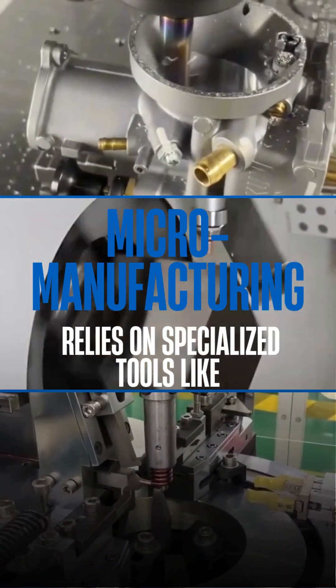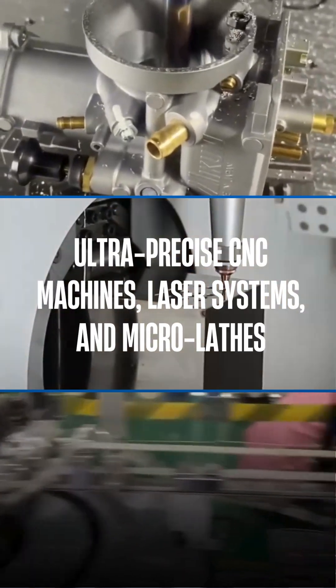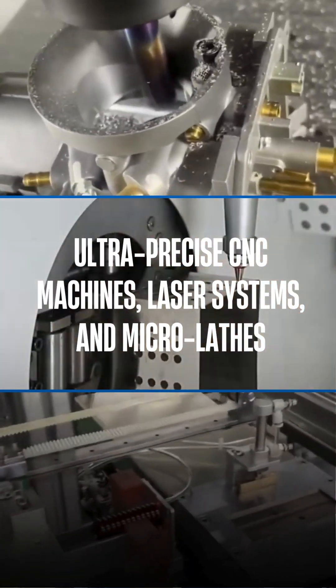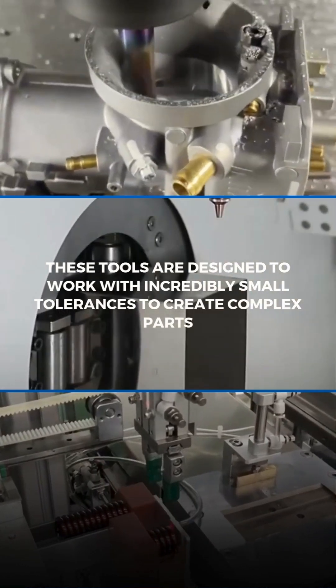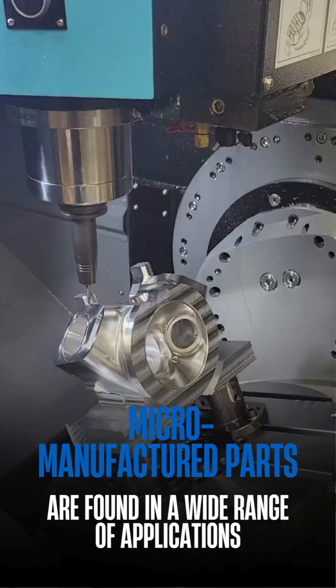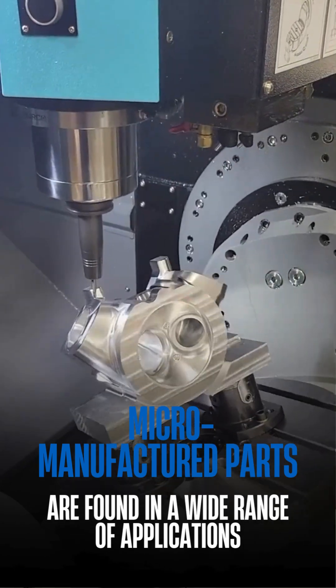Micro-manufacturing relies on specialized tools like ultra-precise CNC machines, laser systems, and micro-blades. These tools are designed to work with incredibly small tolerances to create complex parts.